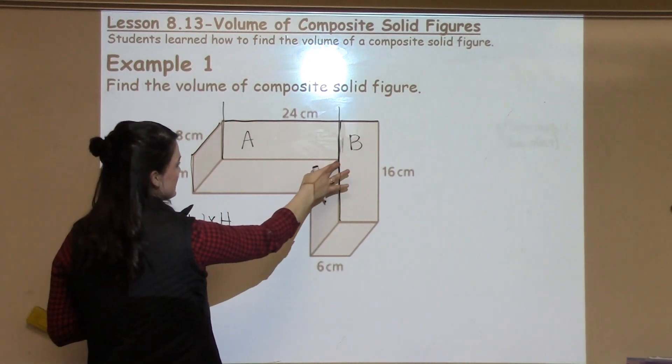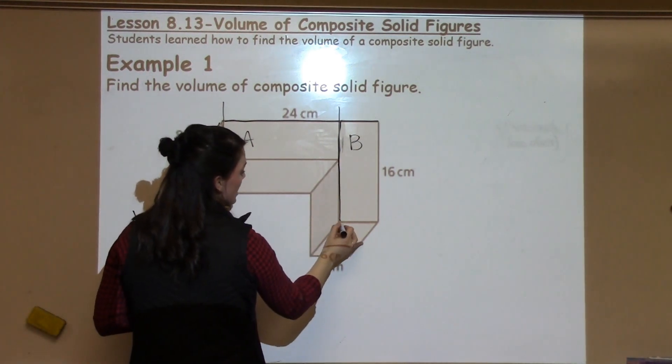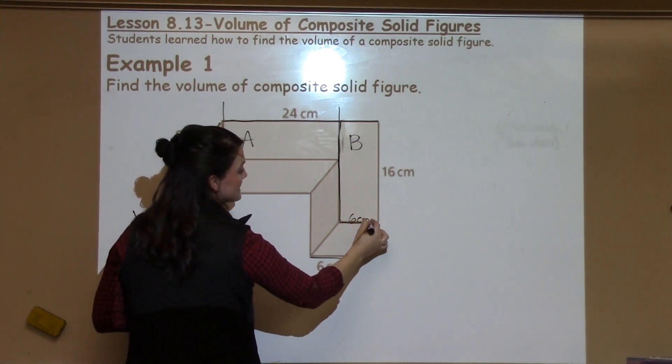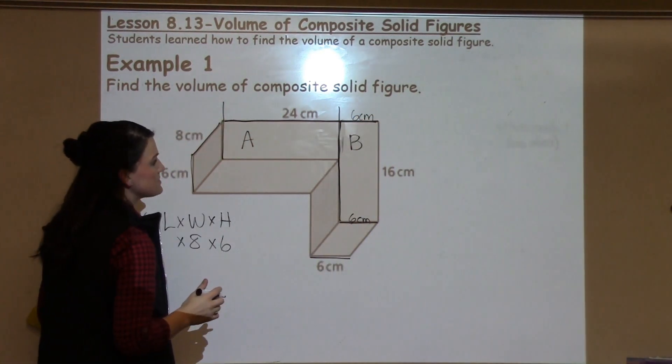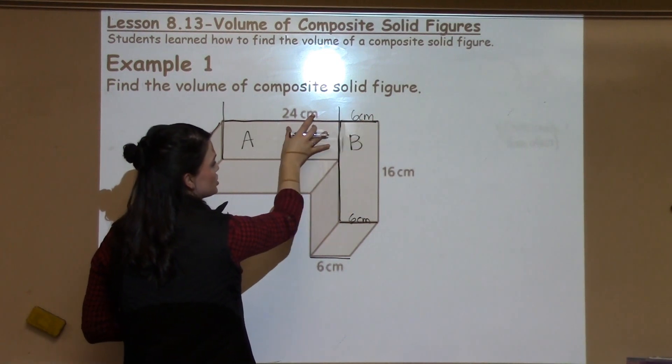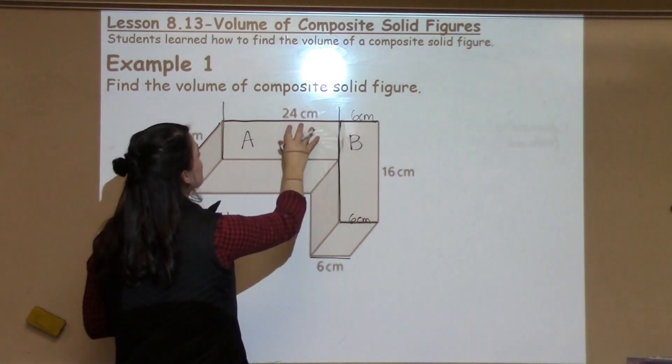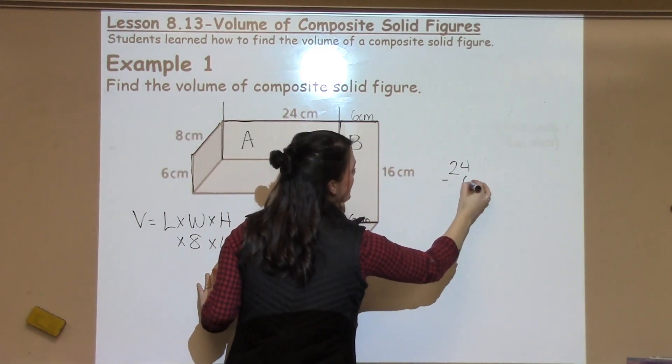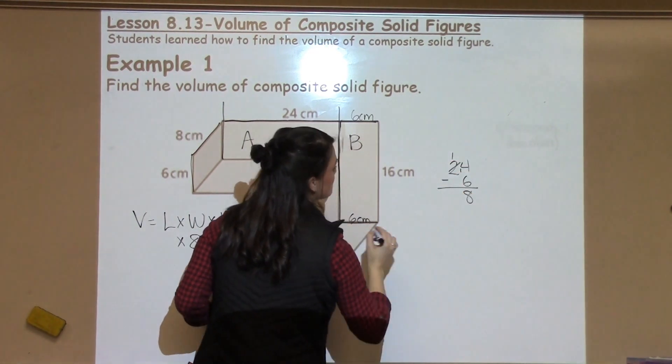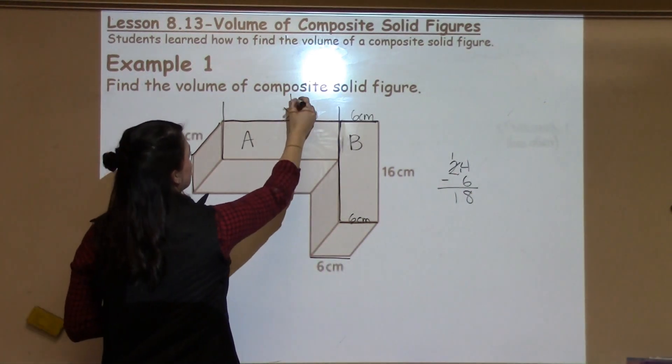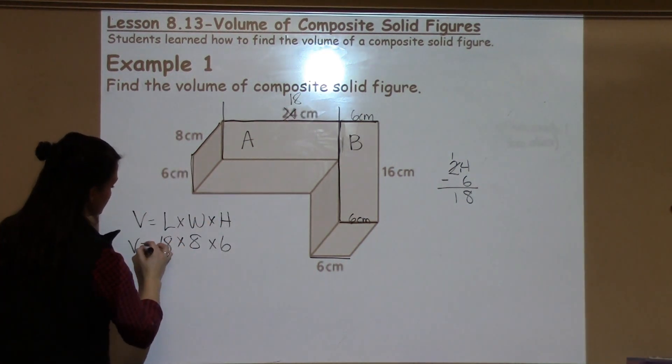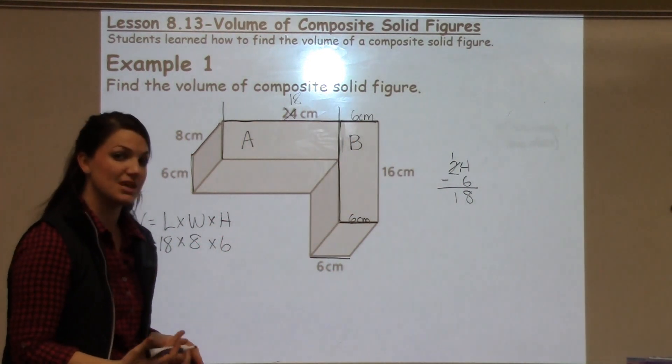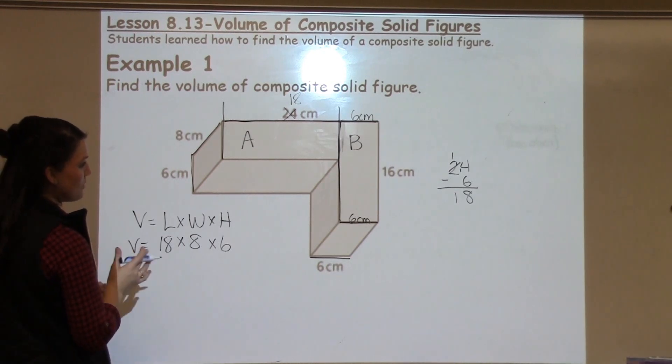I don't want to include all of 24. I need to think about what part of the 24 is just part A, which is from this side to this side here. When I'm looking at that, I know by looking at part B that this part is six, which means this part is six, which means this part is six. So I have six of these 24 that belong to shape B. I actually want to include six less. So I'm going to take 24 minus six, which would be 18, to help me find the length for shape A. Now I have all three numbers.